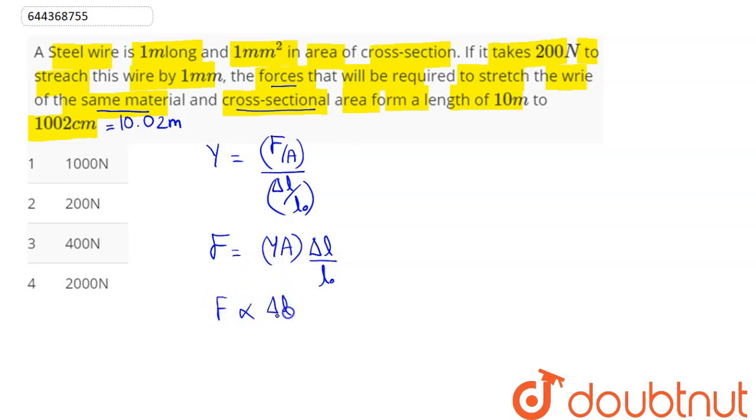So F is proportional to delta L divided by L₀. We have the ratio F₁ divided by F₂ is equal to delta L₁ by L₁ divided by delta L₂ divided by L₂.